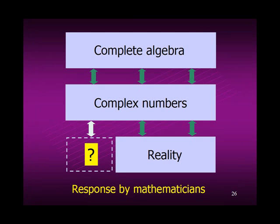This represents the actual response by mathematicians. To achieve algebraic closure, the real numbers were extended to include the imaginaries, thus creating the complex number system. The problem with this response is indicated. It destroys the correspondence between numbers and reality. This has serious consequences, some of which I'll discuss later.